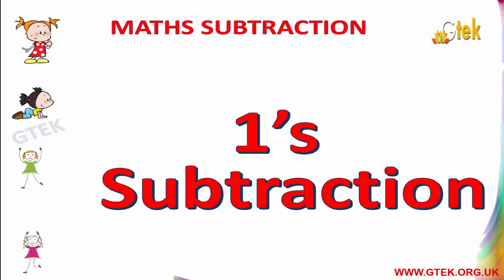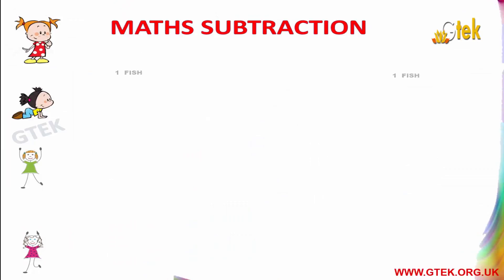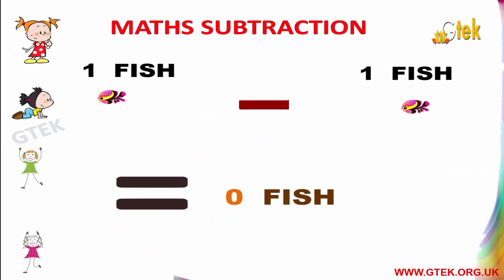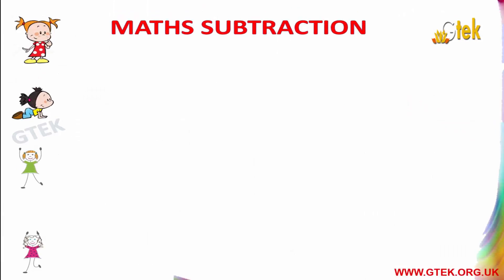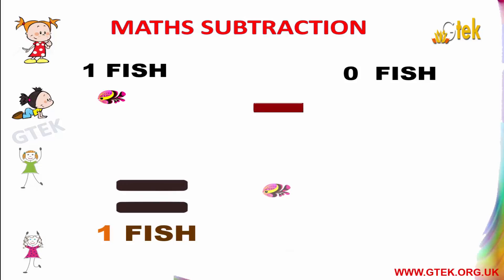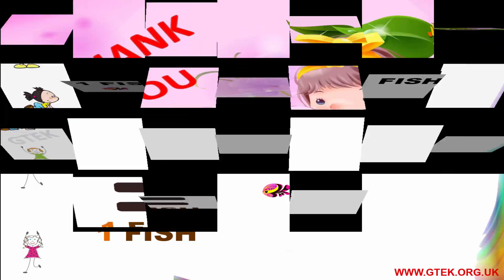Now let us see about the 1's subtraction. 1 fish minus 1 fish equals 0 fish. 1 fish minus 0 fish equals 1 fish.